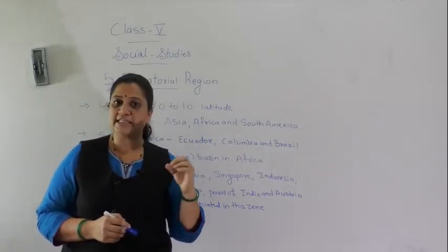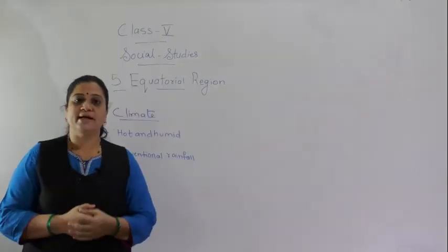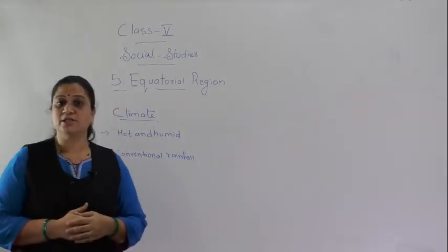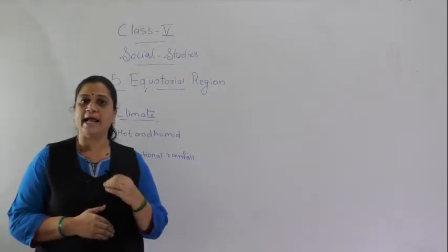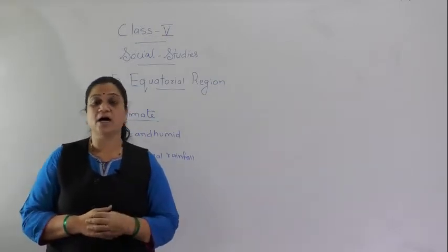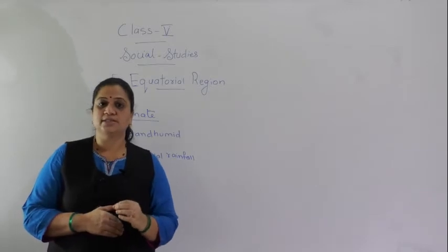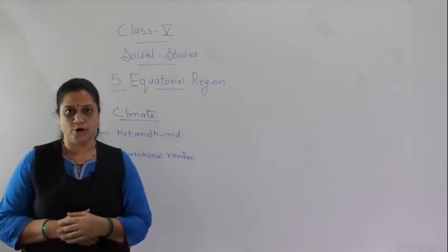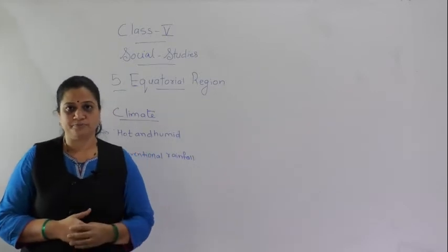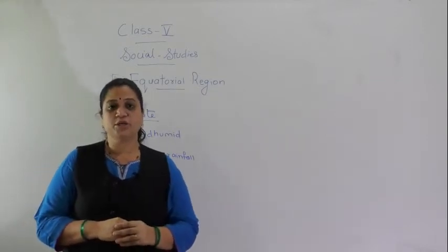Now let us see how the climate is in the equatorial region. As this region falls in the torrid zone, it is extremely hot and humid throughout the year, experiencing equal days and nights. The harsh sun rays heat up the land and cause constant evaporation from the water bodies. The equatorial region also experiences high humidity and heavy rainfall — that is why this region is also known as the hot wet land.